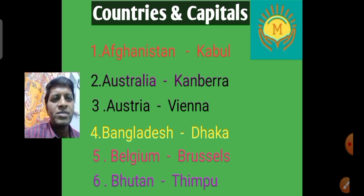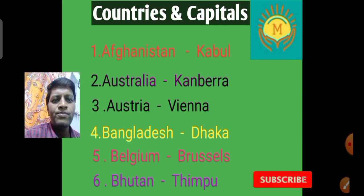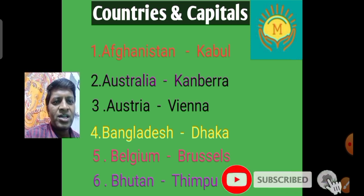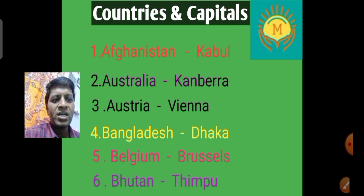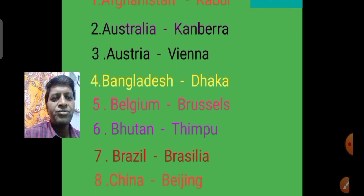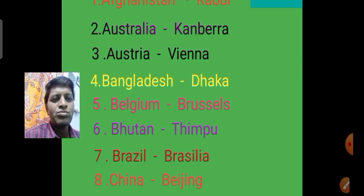The first country is Afghanistan, capital Kabul. The second country is Australia, capital Canberra. The third country is Austria, capital Vienna. The fourth country is Bangladesh, capital Dhaka. The fifth country is Belgium, capital Brussels. The sixth country is Bhutan, capital Thimphu.